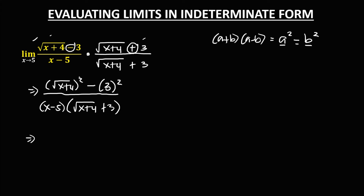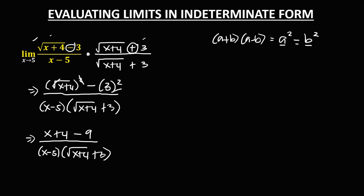Simplifying the numerator: we have (x + 4) minus 3 squared, which is 9. So the numerator becomes x + 4 minus 9. Simplifying, positive 4 minus 9 gives negative 5. The expression is now negative 5 over (x - 5) times (√(x + 4) + 3).